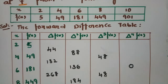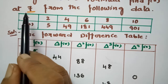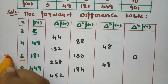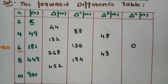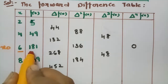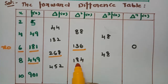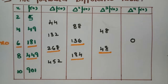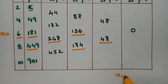After finding the difference table, we have to find f(x) when x equals 7. The nearest value to 7 is 6, so I am taking x₀ equal to 6. In Bessel's formula, 'B' stands for 'by' — meaning we take two values at a time. In Stirling's formula, 'S' stands for 'single', alternating single and double values.